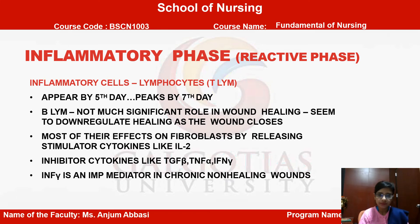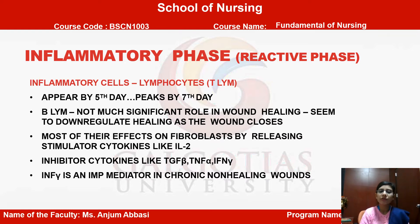Next are the lymphocytes — T lymphocytes. They appear by the 5th day and peak by the 7th day. B lymphocytes do not play a significant role in wound healing and seem to down-regulate healing as the wound closes. Most of their effects on fibroblasts occur by releasing stimulator cytokines like IL-2, inhibitor cytokines like TGF-β, TNF-alpha, and IFN-gamma. This is a mediator in chronic non-healing wounds.